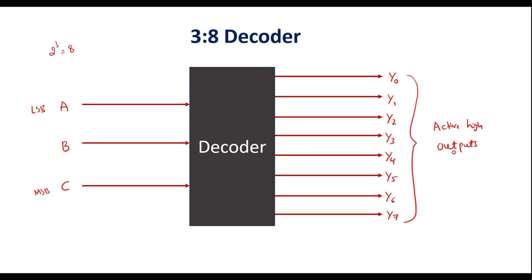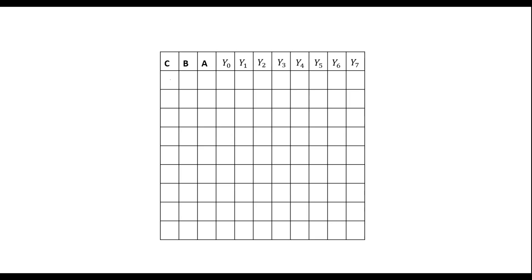Active high output means the selected output line is high and the rest are 0. Now, let me write the truth table. We have 3 inputs and 8 outputs. With 3 inputs, the possible combinations are 2 power 3, that is 8 combinations.